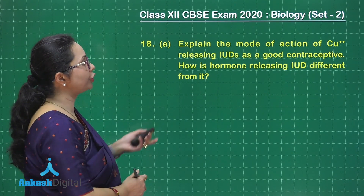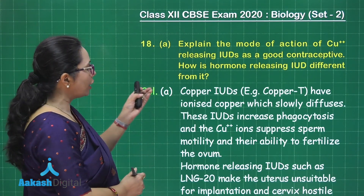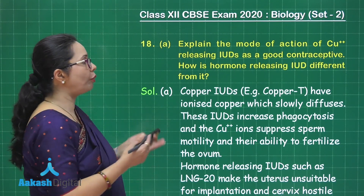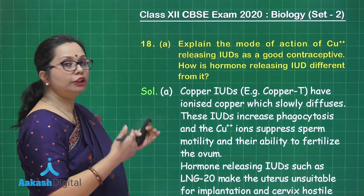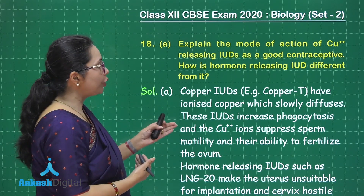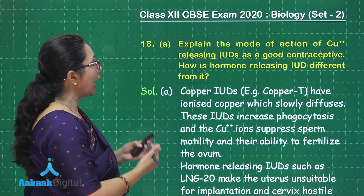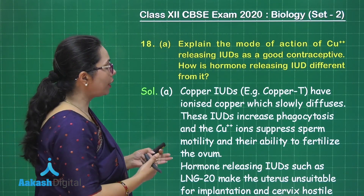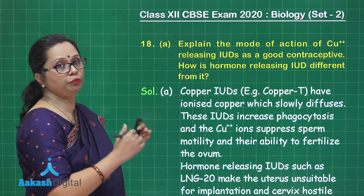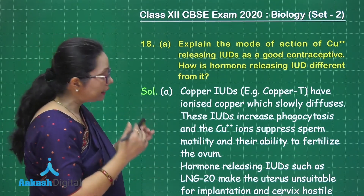The first part covers the action of copper releasing IUDs. One of the best examples is Copper-T. These devices contain ionized copper which is slowly released. The IUDs increase phagocytic activity within the uterus, and the copper ions suppress sperm motility, thus decreasing the ability of the sperm to fertilize the egg.